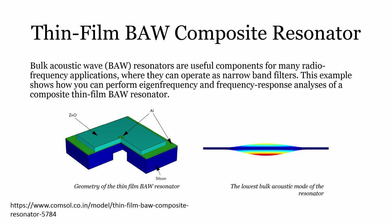Then we have the bulk acoustic wave (BAW) composite resonator model. The 3D structure is again simplified to a 2D cross section for modeling, though there is also a full 3D example for this BAW sensor. From this we get a frequency response with resonant peak and anti-resonant peak to understand the BAW resonator.